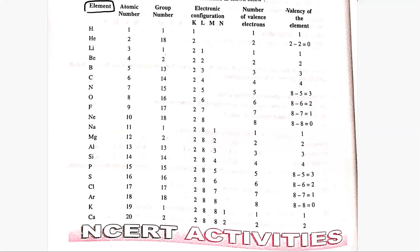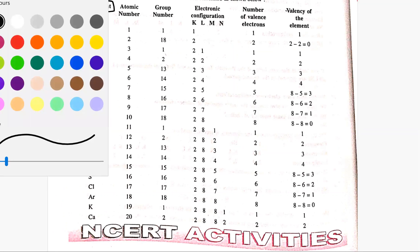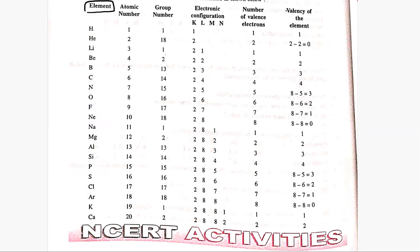These are the group numbers as written here. Now, the electronic configuration of the first 20 elements.